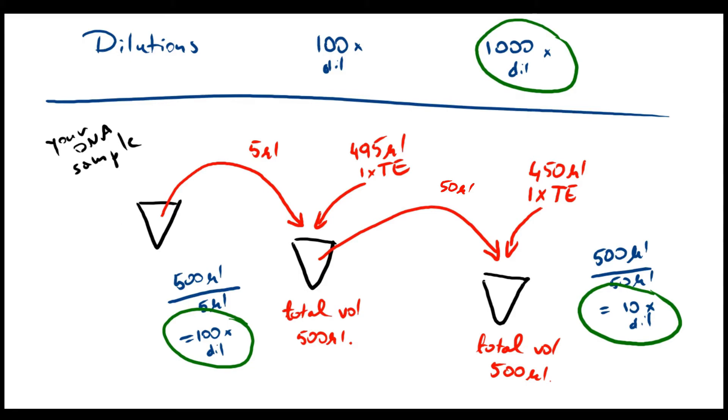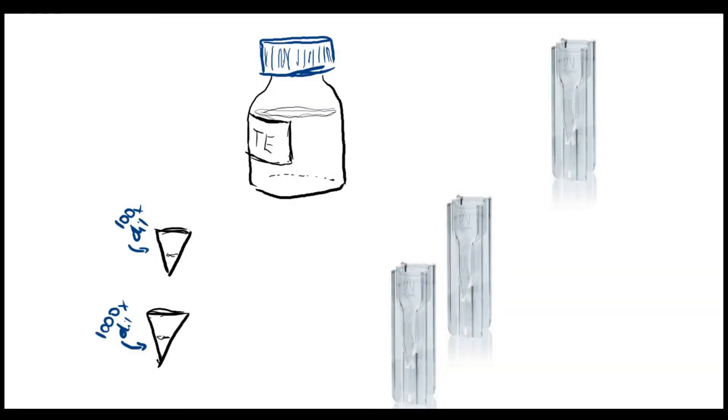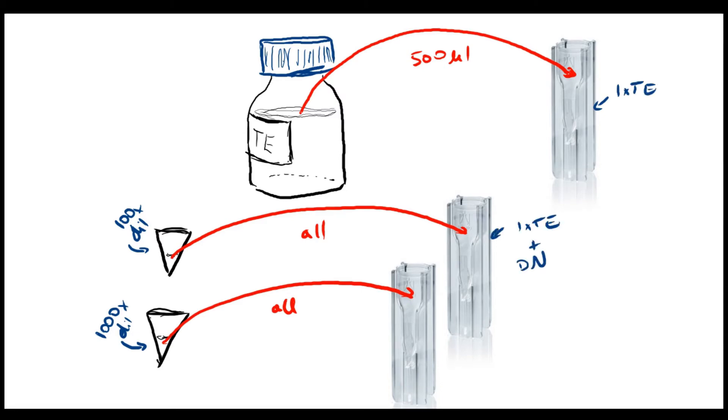Now that you have your dilutions done, you can go ahead and test your samples. The first thing you need to do is put a blank into your spectrophotometer. In this case, we were using 1X TE as our diluent, so we're going to use 1X TE as our blank as well. In this way, the only difference between our blank and our DNA samples is the DNA itself.